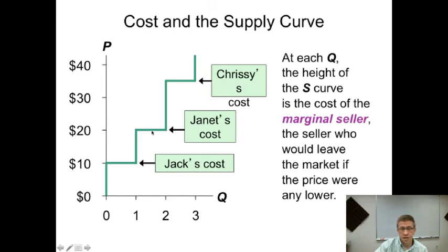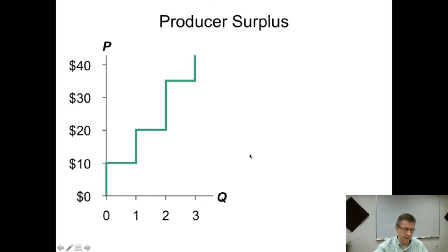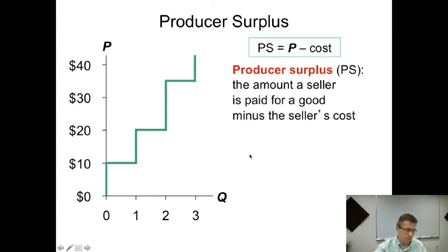At a price of twenty, Janet is the marginal seller. She'll drop out of the market if it drops below twenty. Any price above thirty-five, Chrissy is in. If it drops below thirty-five, Chrissy drops out of the market. That's what we'd refer to as the marginal seller in this case.